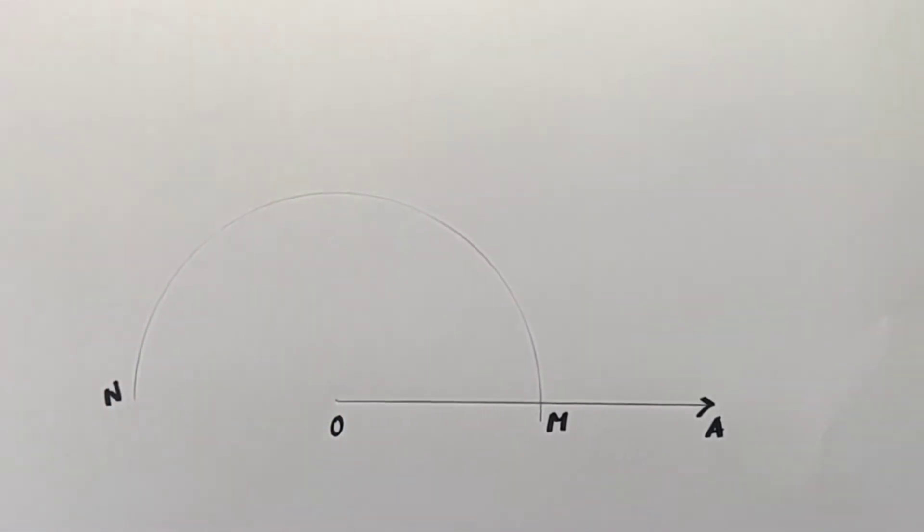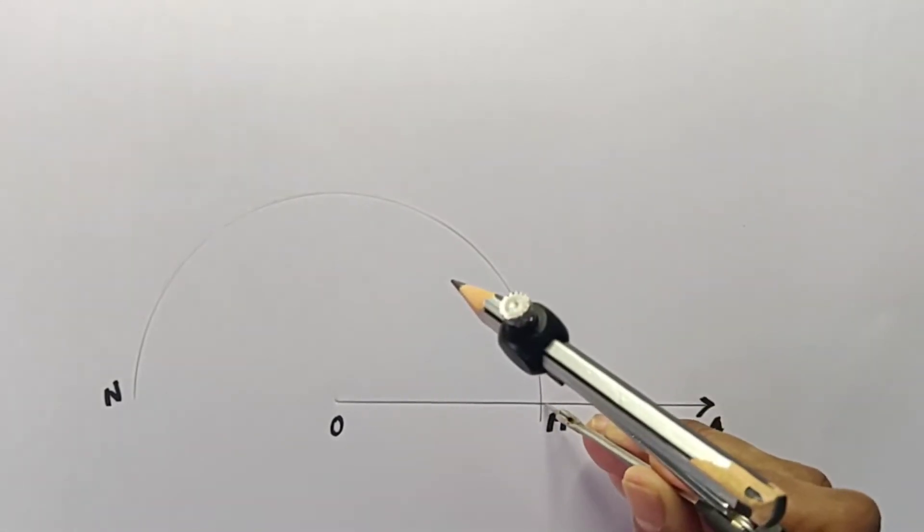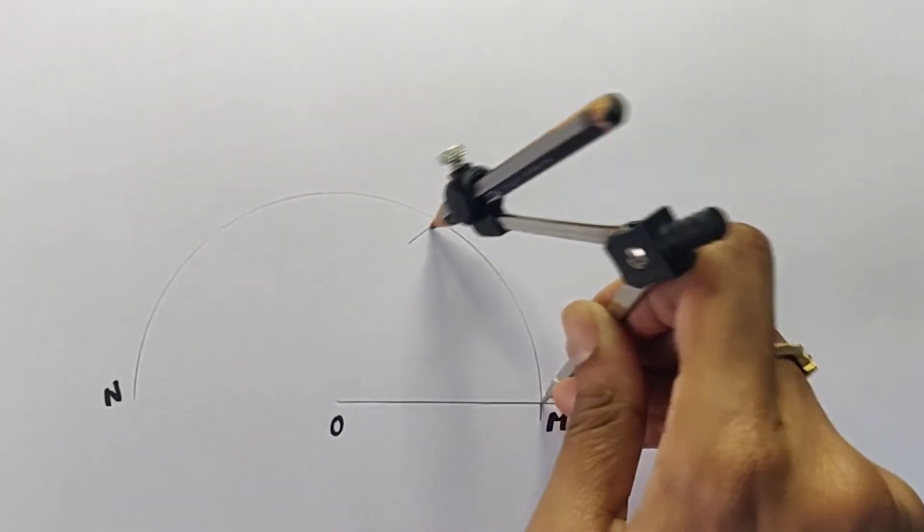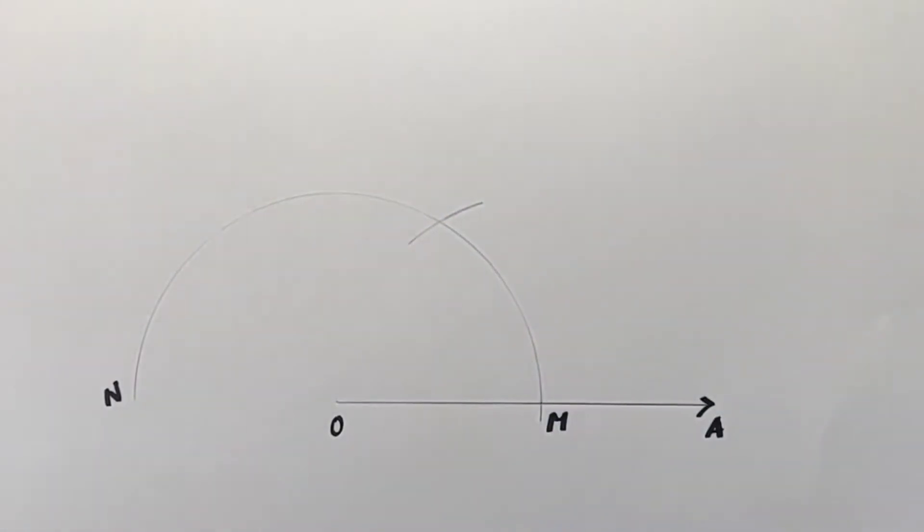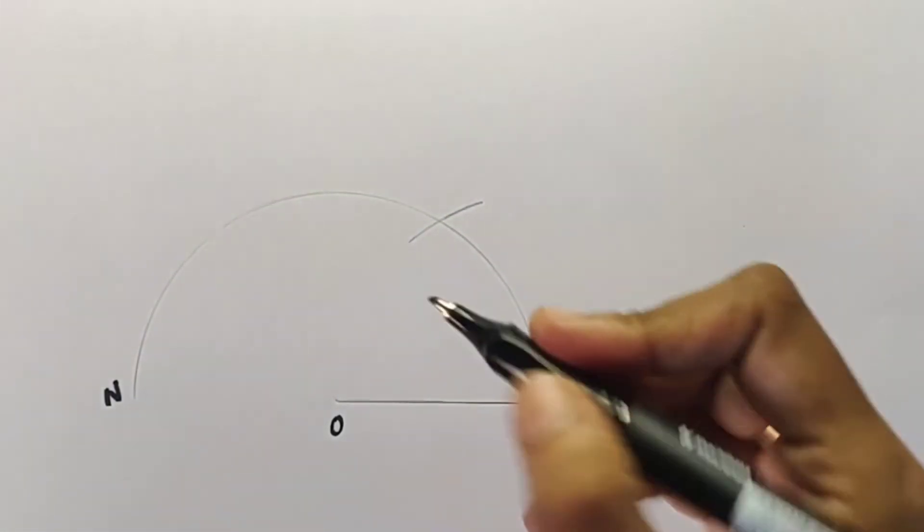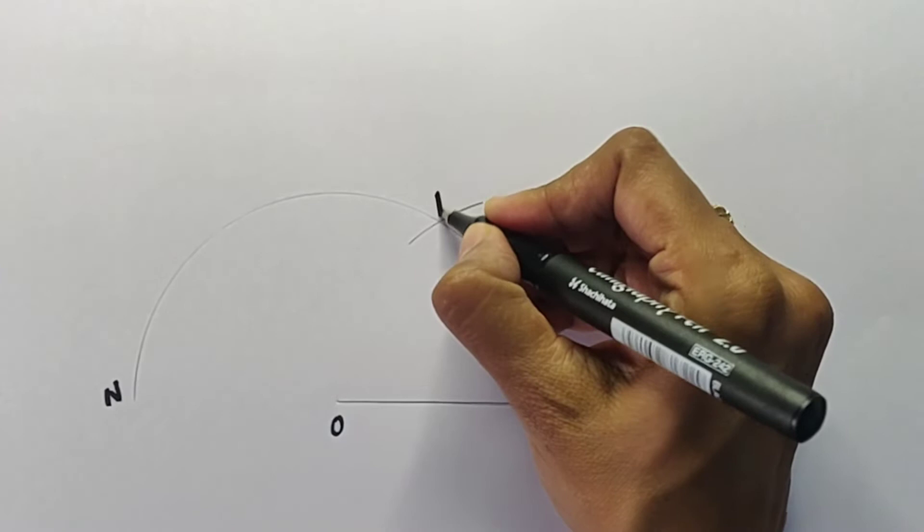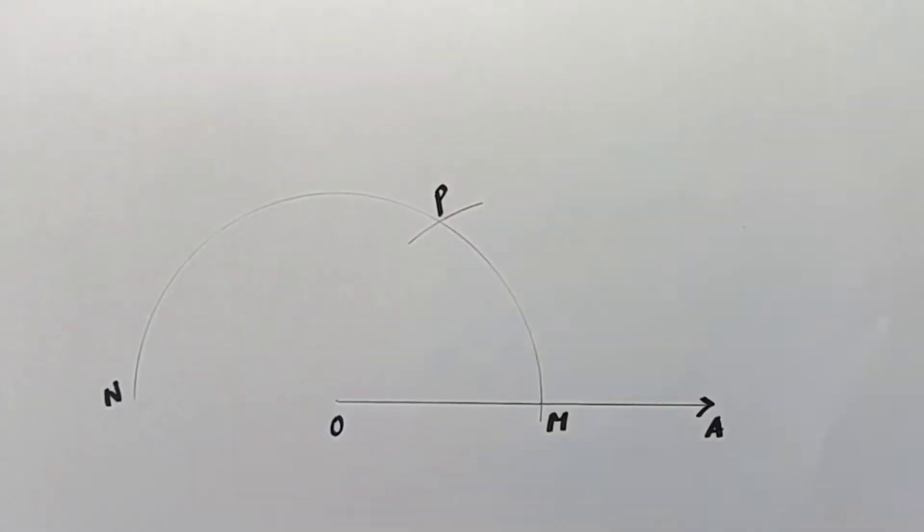Now, with the same radius, with M as center, draw an arc cutting the previously drawn arc at point P. Let's label this point of intersection as point P.